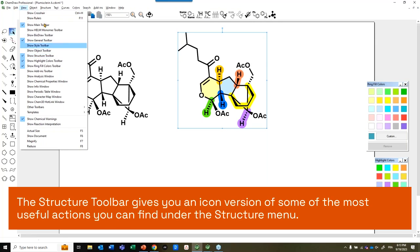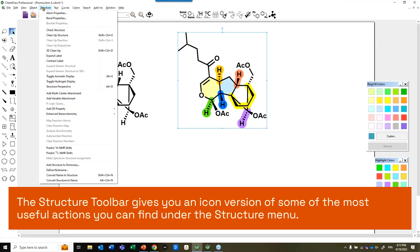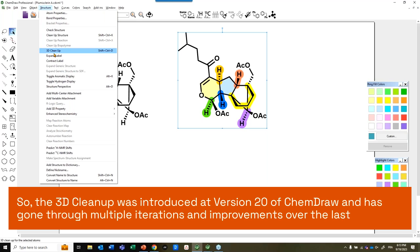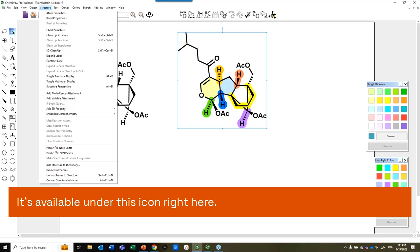The Structure Toolbar gives you an icon version of some of the most useful actions you can find under the Structure menu. One of them is the 3D cleanup. So the 3D cleanup was introduced at version 20 of ChemDraw and has gone through multiple iterations and improvements over the last versions.